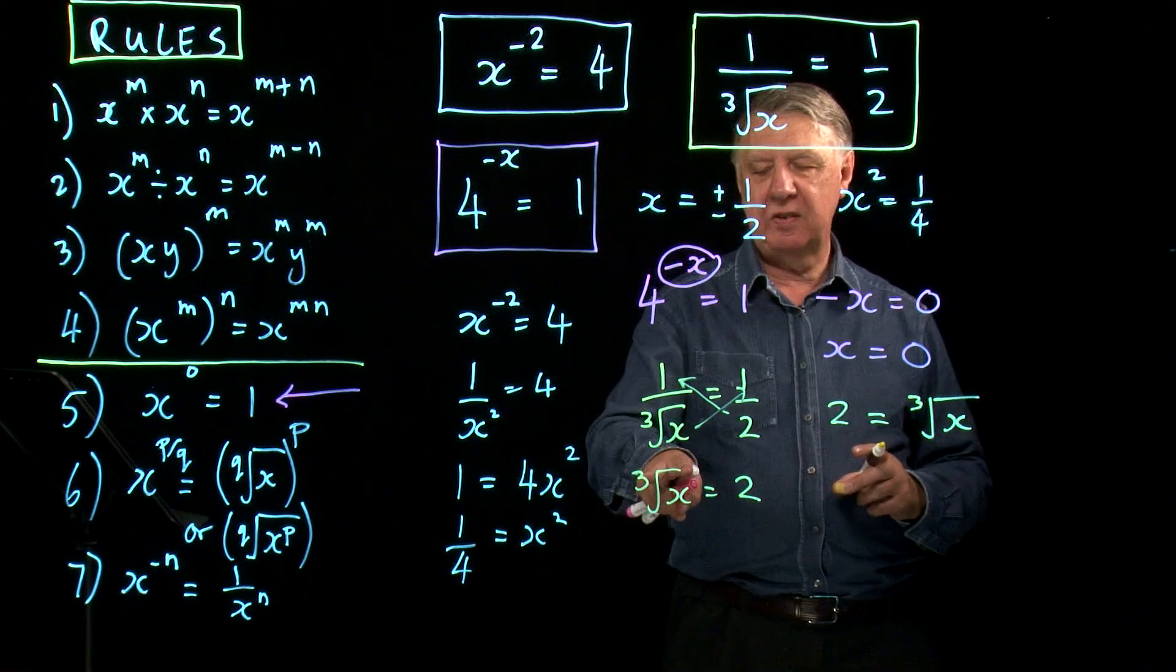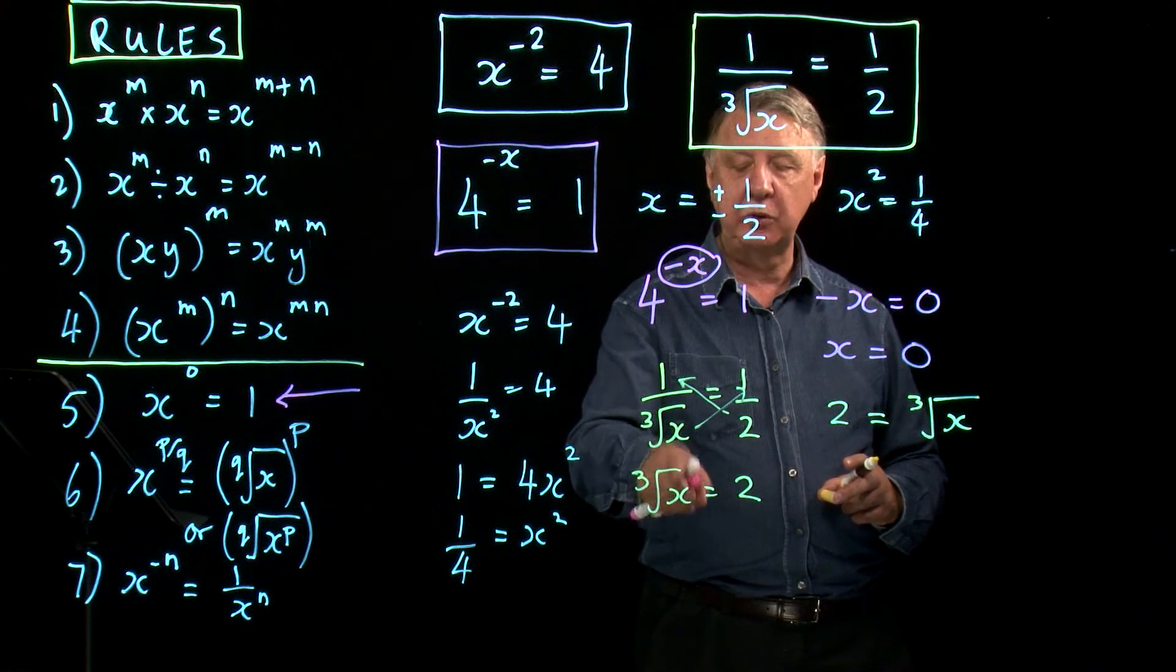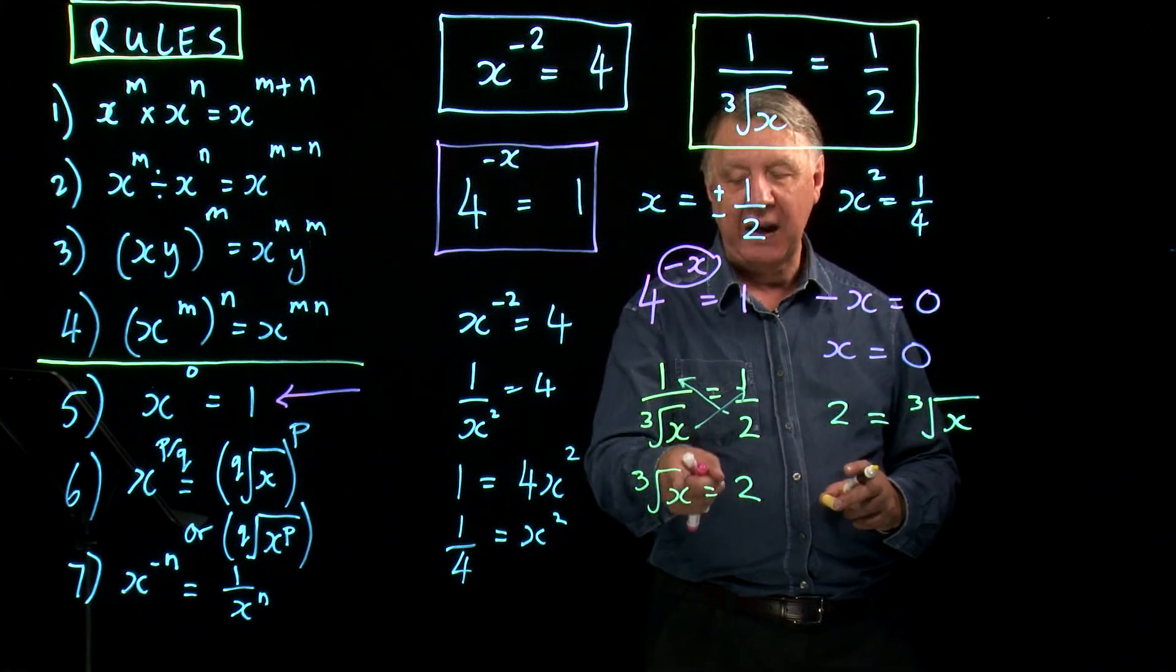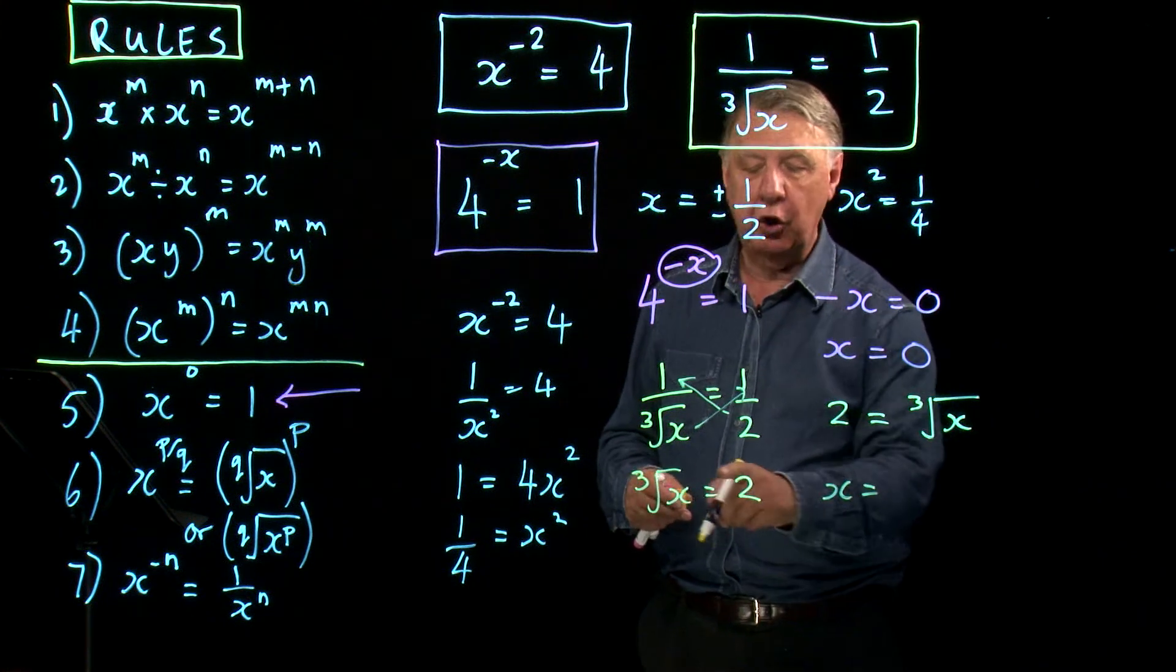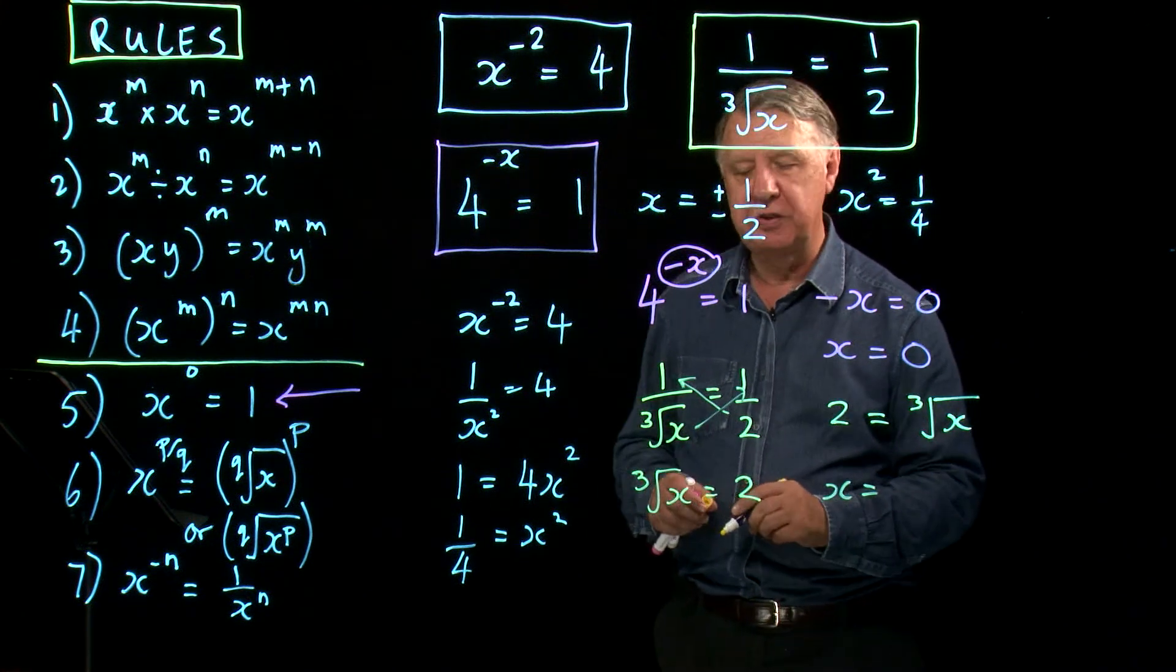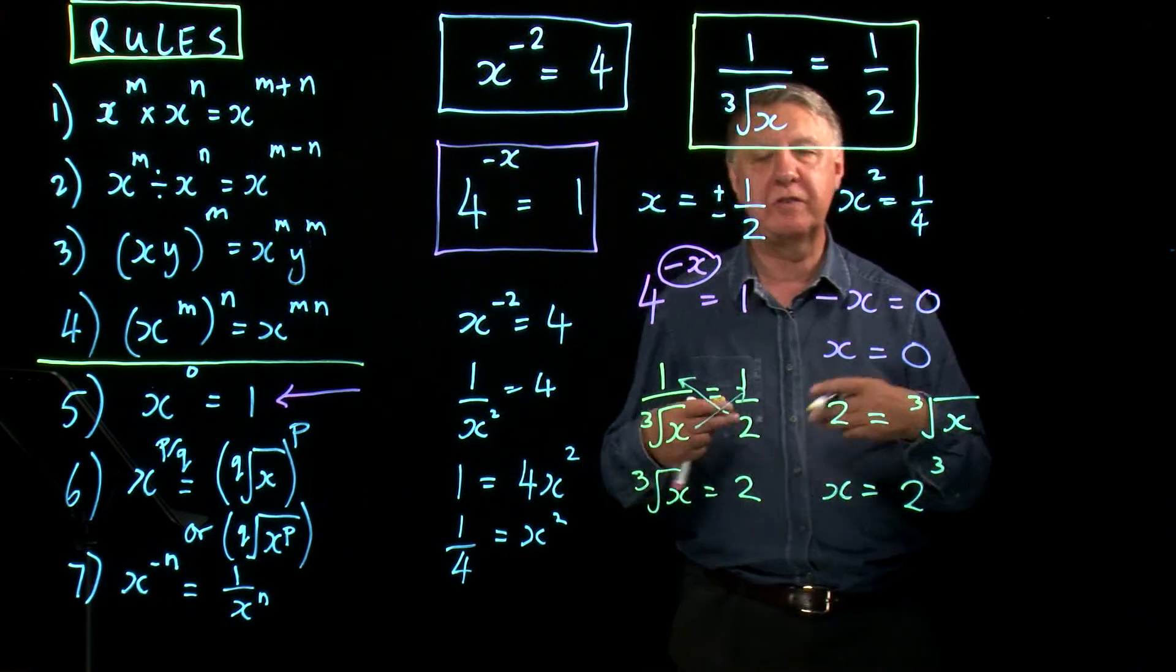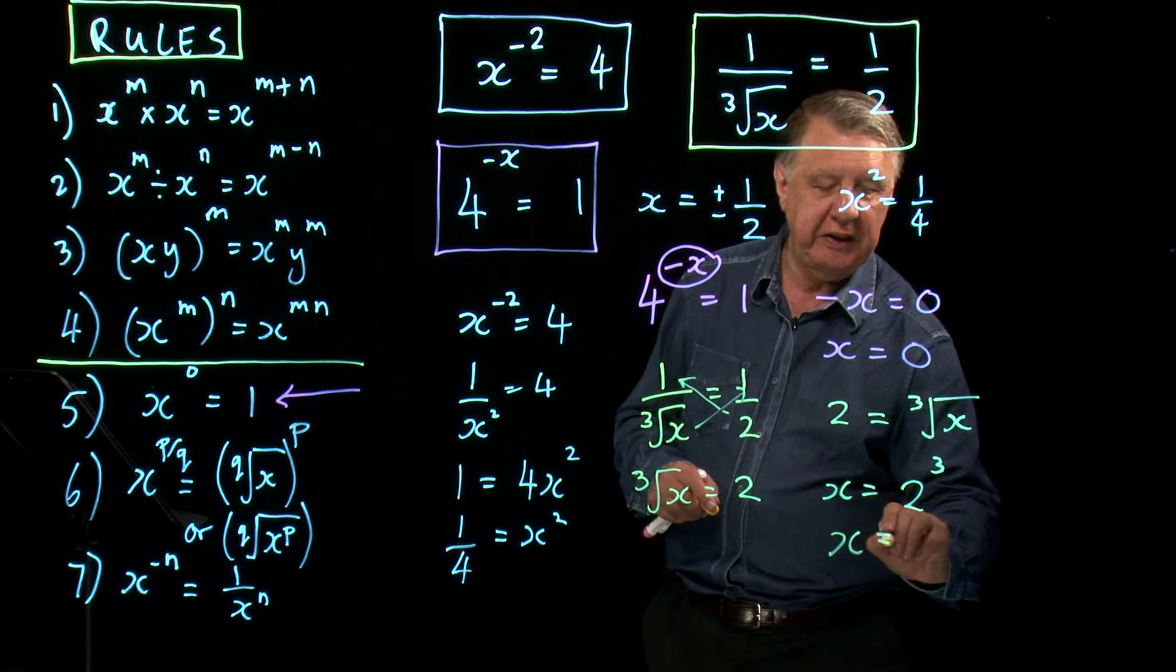Now what is this really saying to us? It's saying that if I take the cube root of x I end up with the answer 2. So in other words to work backwards to find what x equals. The opposite of cube rooting is cubing. The reverse of cube rooting is cubing. So x would equal 8.